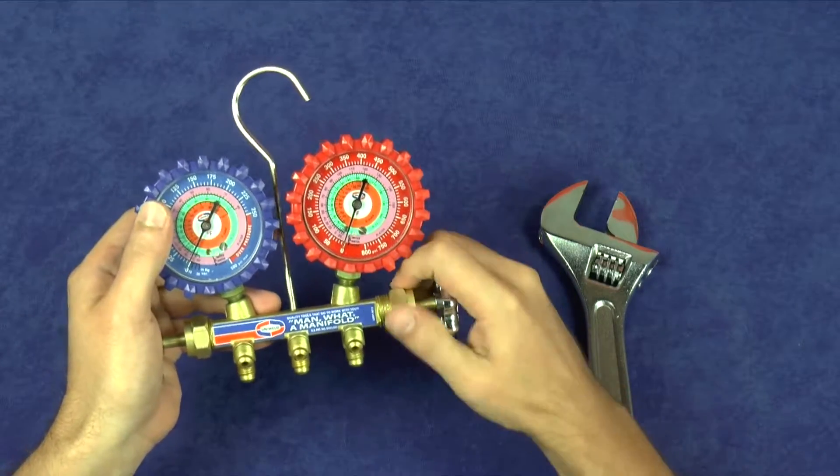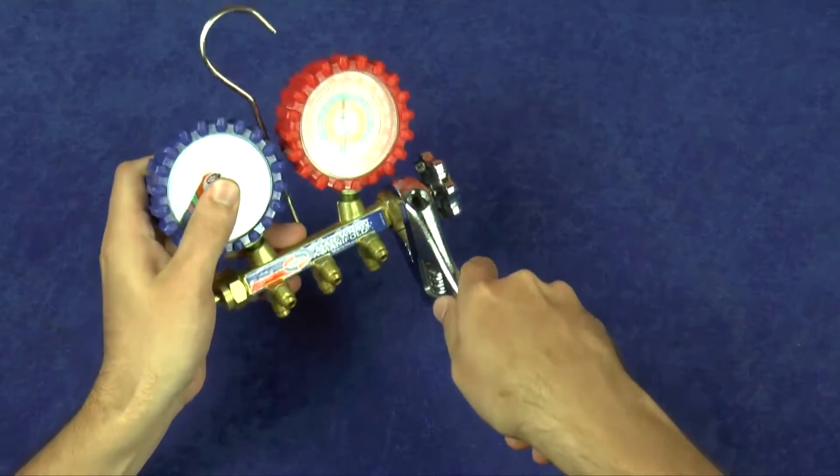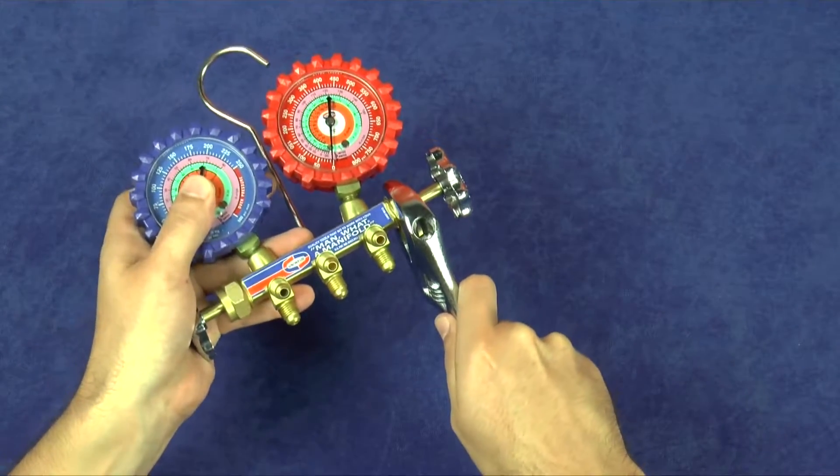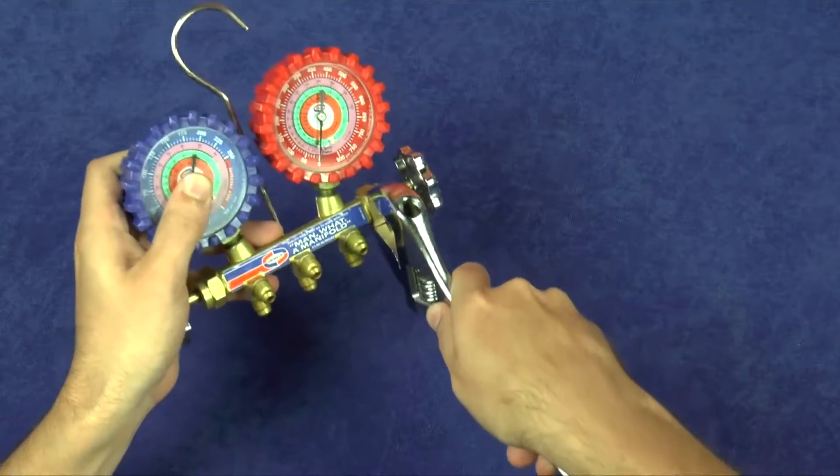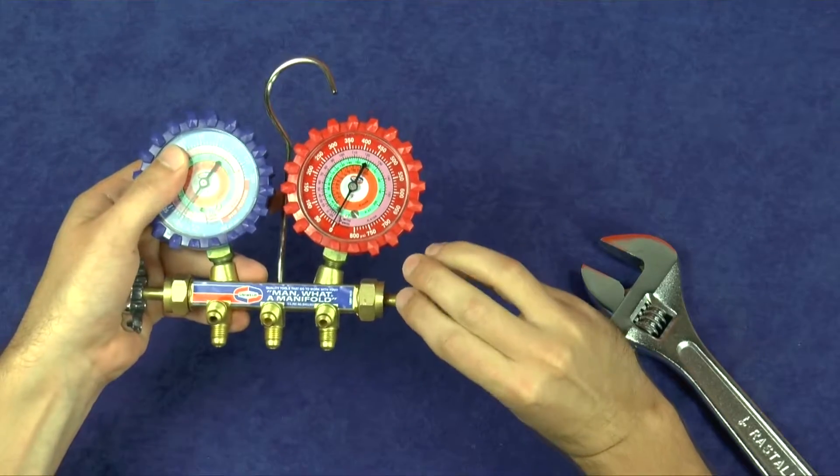The tightening of the packing nut is done by feel. The nut should be wrench tight and the hand wheel should turn to open and close the valve with some resistance. If the hand wheel feels tight and is difficult to turn, you may have over-tightened the packing nut and should loosen it slightly.